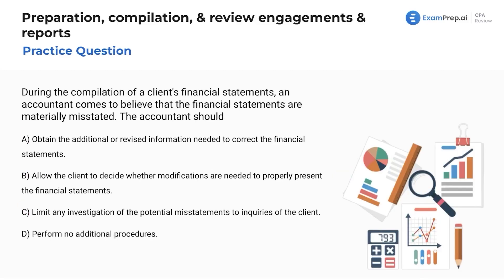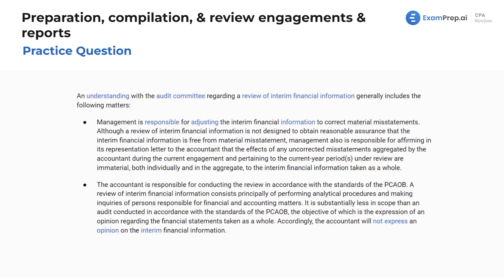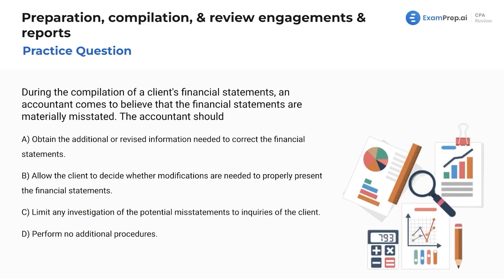During the compilation of a client's financial statements, the accountant comes to believe that the financial statements are materially misstated. What should the accountant do? Option A: obtain additional revised information to correct the financial statements — that sounds pretty solid. Option B: allow the client to decide whether modifications are needed to properly present — no, it's not up to the client. As the practitioner, it's your job to make sure the financial statements are looking good, so we're not going to let them decide.